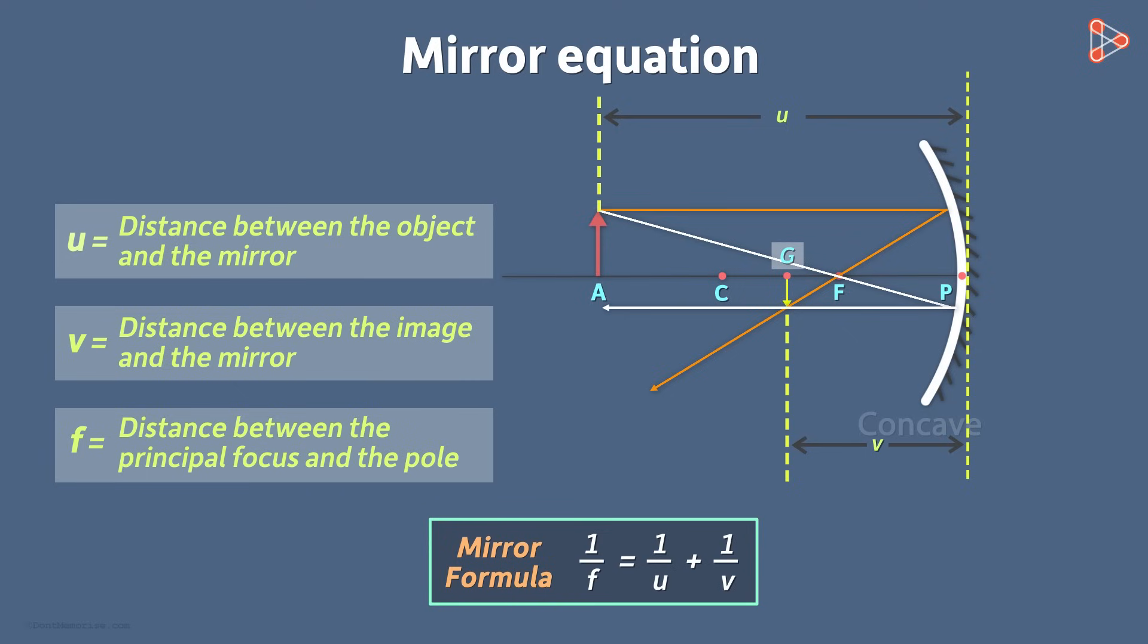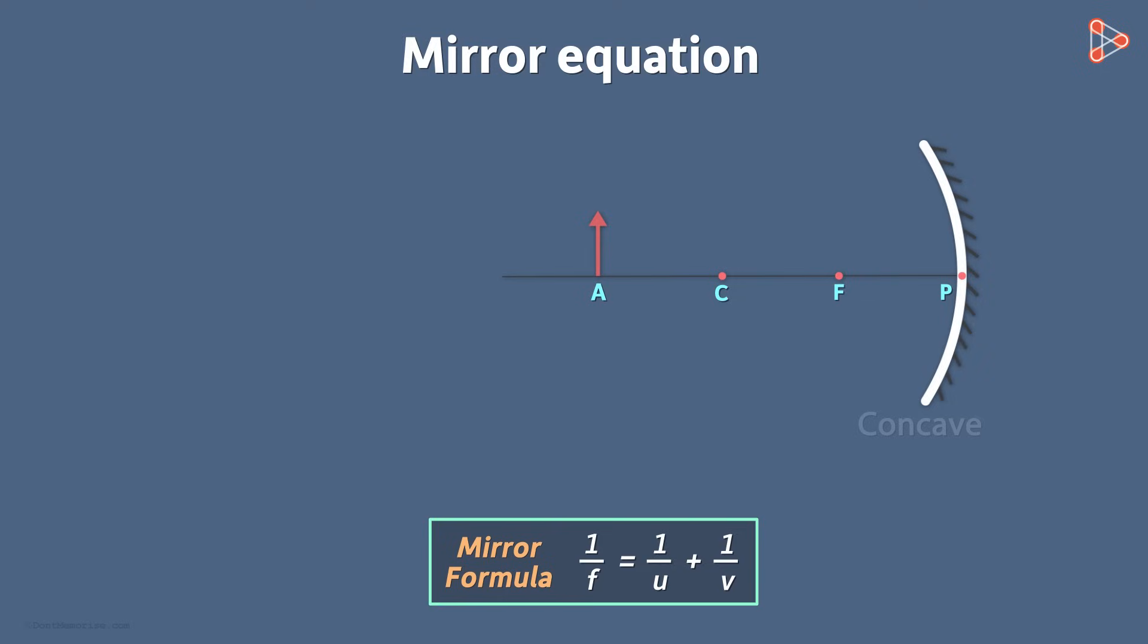So from the equation, you can see that it gives us the relation between the object's distance from the mirror, image's distance from the mirror and the focal length. What if instead of this, I had placed an object somewhere else? It wouldn't change our formula. The equation does not depend on the object's position from the mirror. It is same for any position of the object.